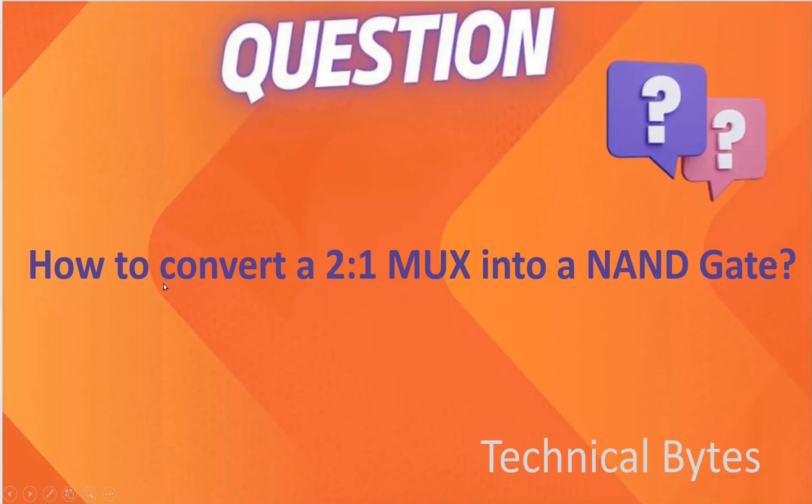The question is: how to convert a 2:1 multiplexer into a NAND gate?